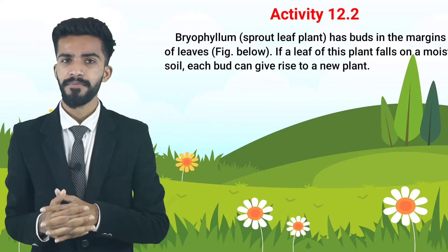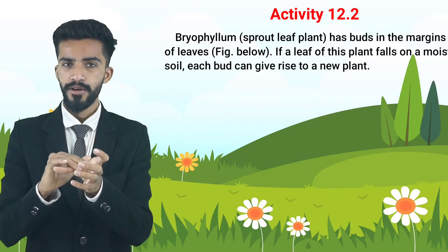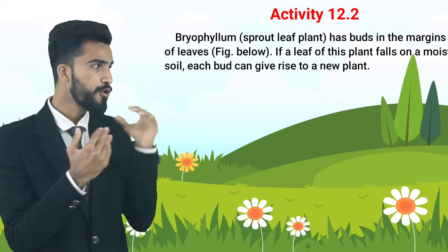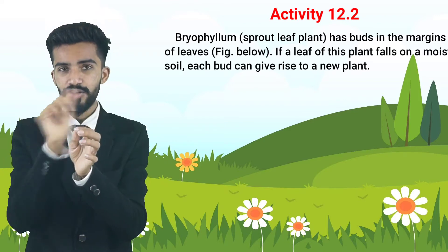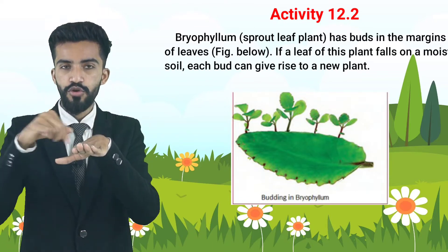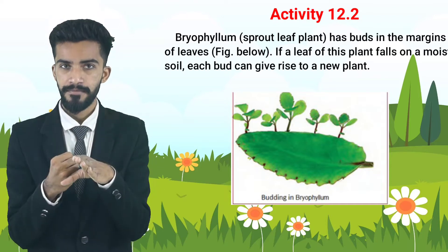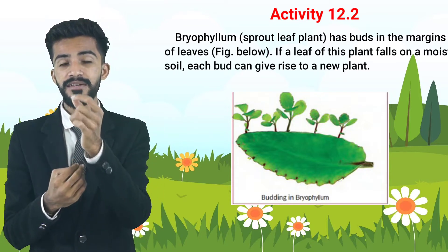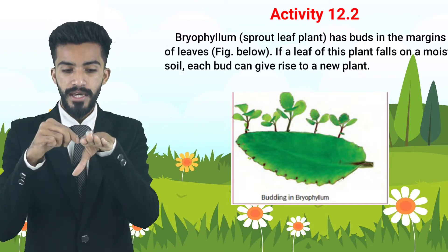Another plant is Bryophyllum, also called the sprout leaf plant. We had seen propagation through eyes or roots; Bryophyllum is different. The Bryophyllum plant has buds in the margins of its leaves — small new plants appear at the border edges of the leaves.